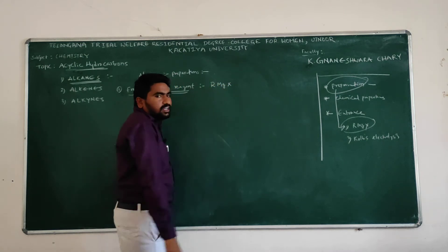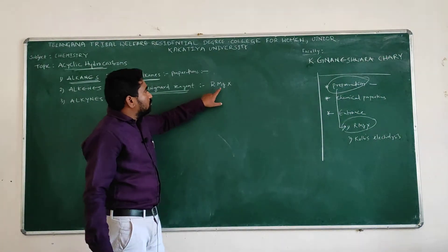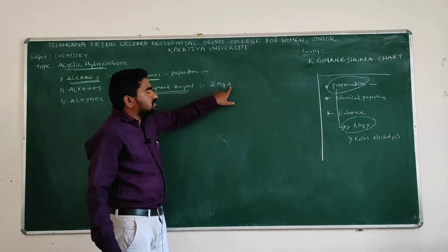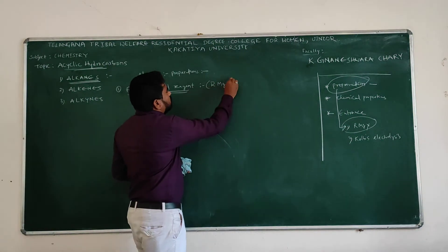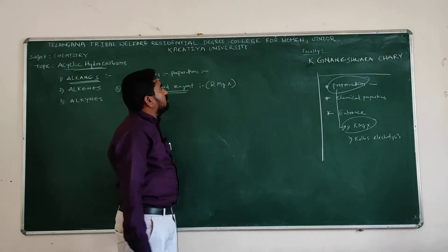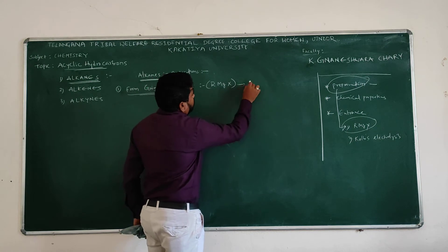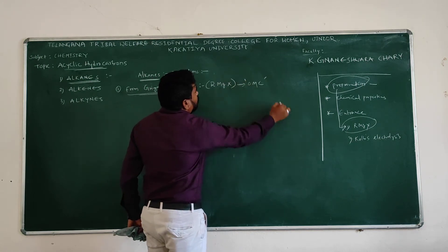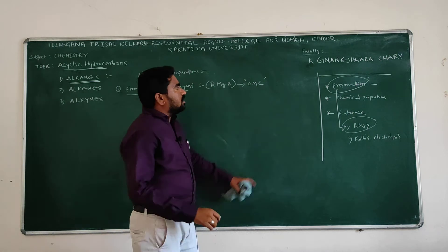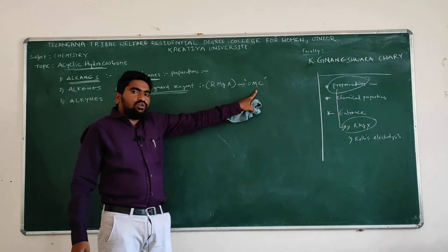R means alkyl group, magnesium is the metal, X means halogen — so RMGX. It is also known as OMC — organometallic complex. We call it an organometallic complex because R is an organic compound and magnesium is a metal.